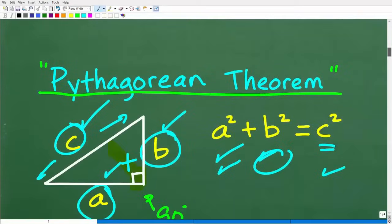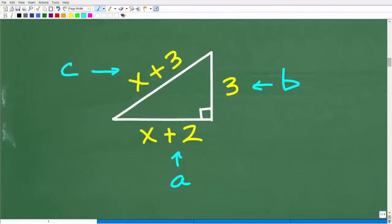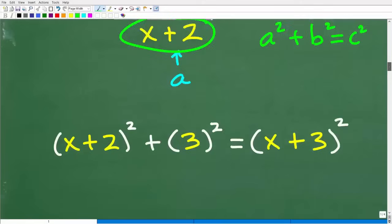But in this particular situation, we have some variables going on here. So we're going to have to use some algebra along with the Pythagorean theorem to figure this out. Let's go ahead and take the next step and identify our A, B, and C. The most important thing here is to know that the longest side, the hypotenuse, will always be C. This side could be A or this side could be B, but it doesn't make a difference. I'll call this A, I'll call this B.